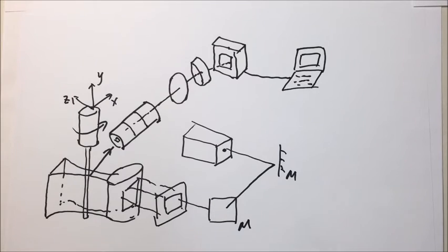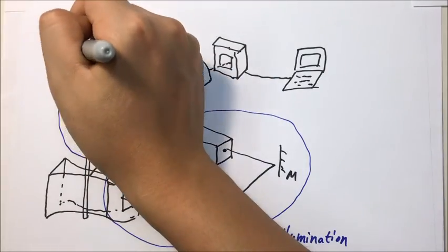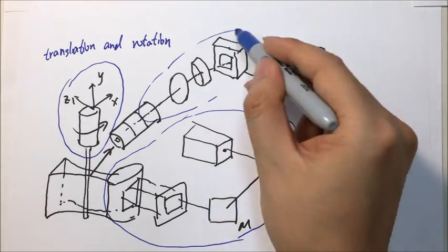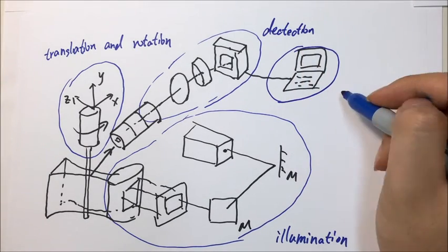In sum, this system consists of four basic units which address illumination of the specimen, translation and rotation of the specimen, light detection, and finally, control of mechanical parts and data collection.